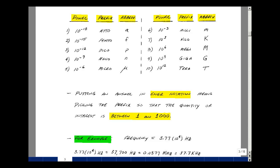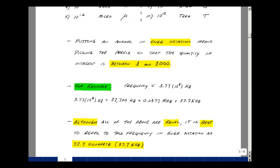To put an answer in engineering notation means that you pick the prefix so that the quantity of interest is between 1 and 1,000. Let's take a look at an example. Suppose I had a frequency of 3.77 times 10 to the fourth hertz. This would be in scientific notation.